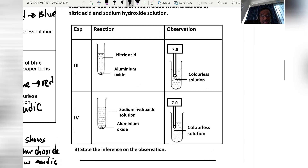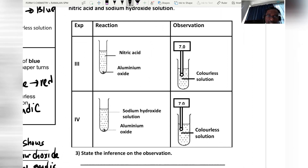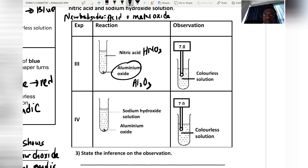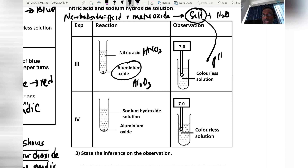For experiments three and four, we have aluminium oxide reacted with nitric acid. When acid reacts with a metal oxide, this is known as a neutralization reaction. The products are a salt solution and water — a colorless solution with a neutral pH value of 7.